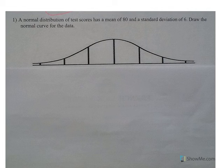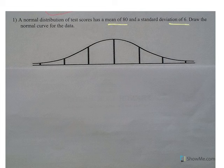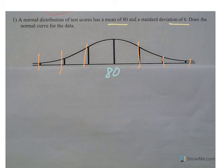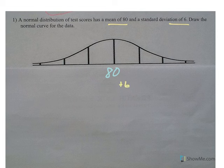This video is going to focus on z-scores, but we're going to start here with a normal distribution curve, knowing that we have a mean of 80 and a standard deviation of 6. Recall that when you're dealing with a normal distribution, your mean always goes directly in the middle, and each one of these vertical bars is a standard deviation away from the mean. Going to the right, we add a standard deviation: starting with 80, adding 6 gives us 86, then 92, then 98.